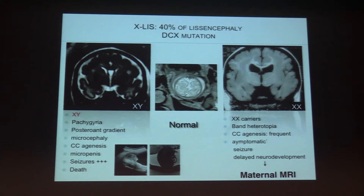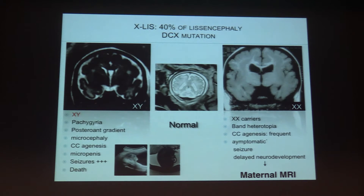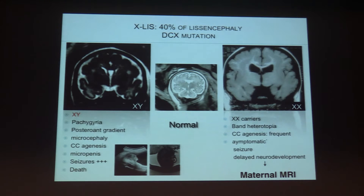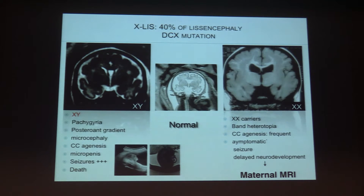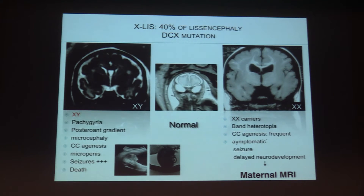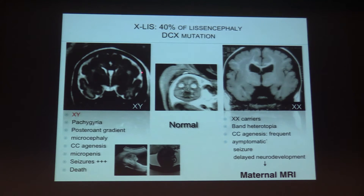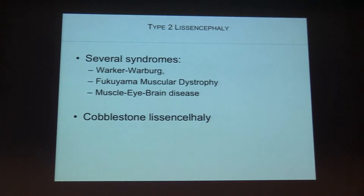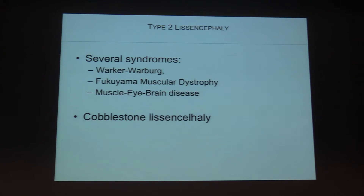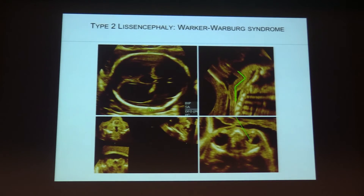We have other types of lissencephaly. The DCX mutation and XLIS do not have the eight-shape but rather a particular pattern of double cortex: as you can see here, with a thickened cortex. Here is the postnatal correlation.